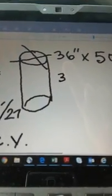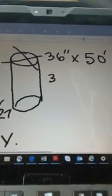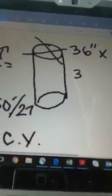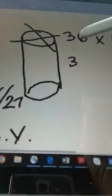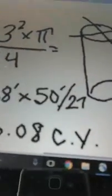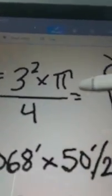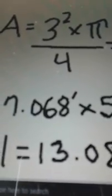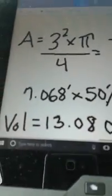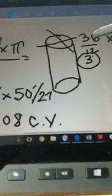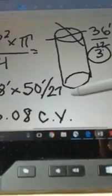So you see what we did. We take the top of the shaft, which is a 36 inch diameter shaft by 50 feet. We say 36 inches across, that's the diameter. You divide it by 12 and get 3 feet. To find the area, A = 3² × π / 4, which gives you 7.068 square feet. You take 7.068 square feet, multiply by 50, which is the length of the shaft, divide by 27, and the volume is 13.08 cubic yards.